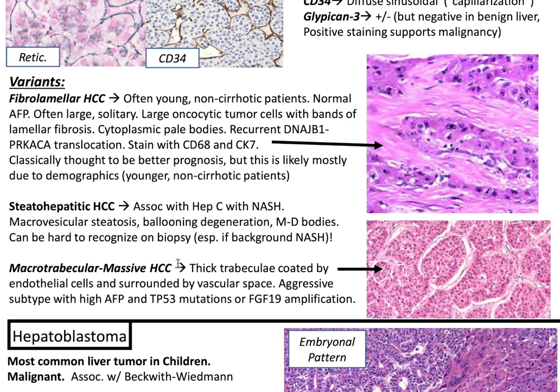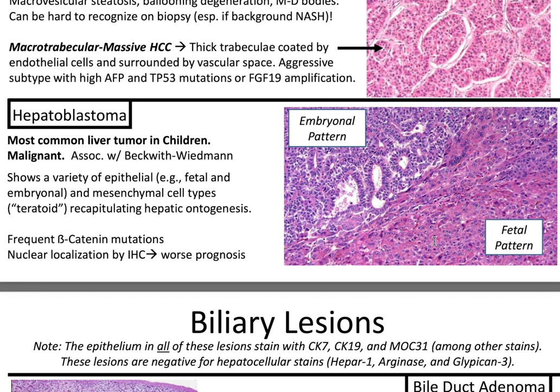Macrotrabecular massive hepatocellular carcinoma. You'll have thick trabeculae coated by endothelial cells and surrounded by vascular space. This is an aggressive subtype with high AFP and TP53 mutations or FGF19 amplification. Hepatoblastoma is the most common liver tumor in children. It's malignant and associated with Beckwith-Wiedemann syndrome. Histologically, it shows a variety of epithelial patterns including fetal and embryonal patterns, as well as mesenchymal cell types, recapitulating hepatic ontogenesis. Frequent beta-catenin mutations occur, and nuclear beta-catenin staining on IHC portends a worse prognosis.